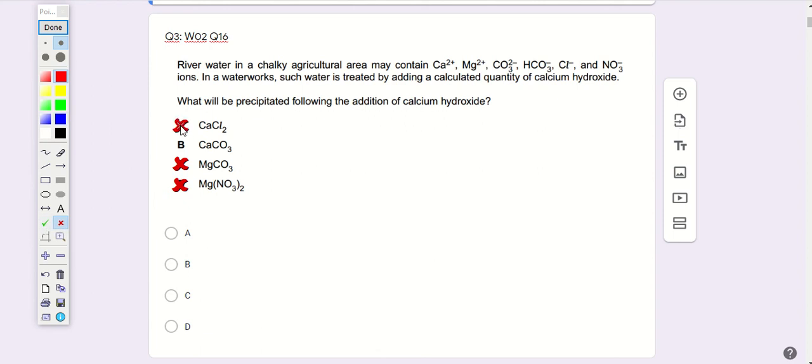So cannot be the precipitate. Calcium carbonate is insoluble in water. That is the precipitate form. So answer is B. So let's go.